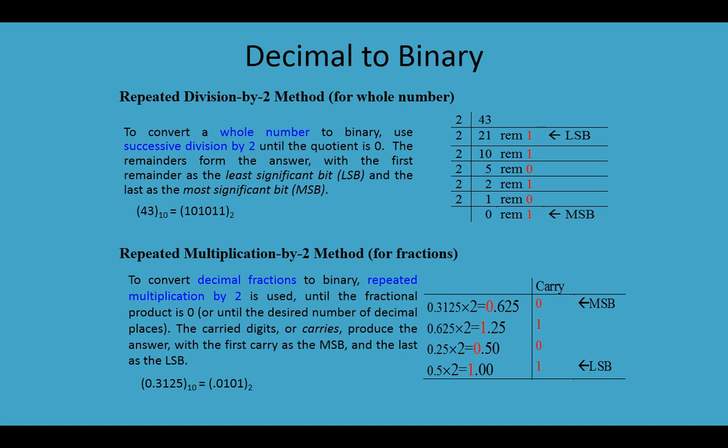Now let's look at the fractional part of decimal to binary conversion. To convert the fractional part, we have to multiply by 2 and write the result. After multiplication by 2, the result has two parts: the integer part to the left of the decimal point, and the fractional part to the right. Write the integer part as a carry on the right side, then multiply 2 again by the resulting fraction, and again write the integer part on the right side.